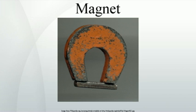Diamagnetic means repelled by both poles. Compared to paramagnetic and ferromagnetic substances, diamagnetic substances, such as carbon, copper, water, and plastic, are even more weakly repelled by a magnet. The permeability of diamagnetic materials is less than the permeability of a vacuum. All substances not possessing one of the other types of magnetism are diamagnetic. Although force on a diamagnetic object from an ordinary magnet is far too weak to be felt, using extremely strong superconducting magnets, diamagnetic objects such as pieces of lead and even mice can be levitated, so they float in mid-air.